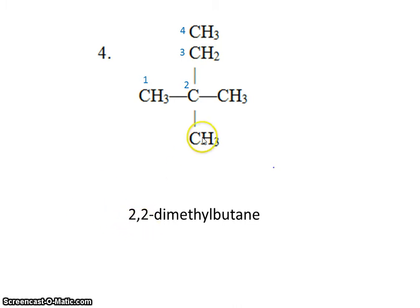2, 2 because both methyl groups are bonded to the second carbon. And butane because the parent chain has four carbons.